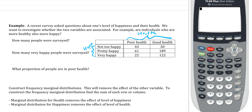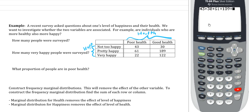The first few questions just make sure we can read the table. First, how many people were surveyed? To find that we simply add up all the numbers: 43 plus 30, 61, 189, 22, and 122. Adding all these values together we get an overall total of 467 people surveyed.